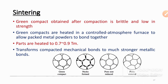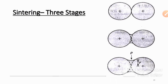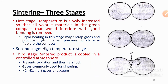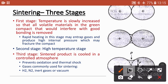The mechanical bonds after compaction become much stronger metallic bonds after sintering. Compaction alone will not give a proper product, so compaction plus sintering must be done to get a strong metallic product. The three stages of sintering are: first, temperature is slowly increased to remove volatile materials from the green compact that would interfere with good bonding; second, the high temperature stage where rapid heating may produce high internal pressure; third, the sintered product is cooled in a controlled atmosphere to prevent oxidation and thermal shock. Gases commonly used include H2, N2, inert gases, or vacuum.